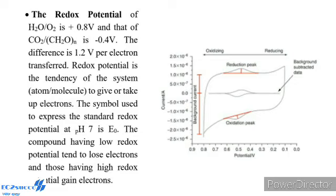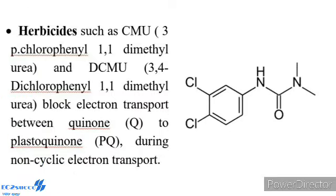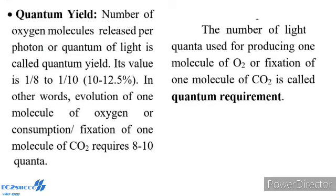Redox potential is the tendency of a system (atom or molecule) to give or take up electrons. The symbol used to express the standard redox potential at pH 7 is E0. Compounds having low redox potential tend to lose electrons and those having high redox potential gain electrons. Herbicides such as CMU (3-chlorophenyl-1,1-dimethylurea) and DCMU (3,4-dichlorophenyl-1,1-dimethylurea) block electron transport between quinone and plastoquinone during non-cyclic electron transport.